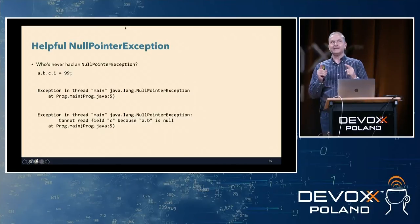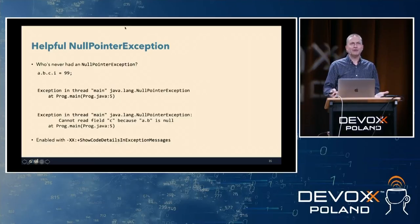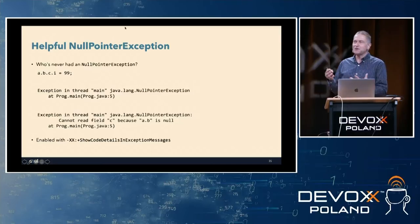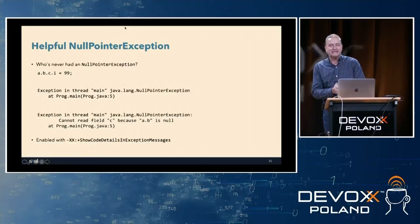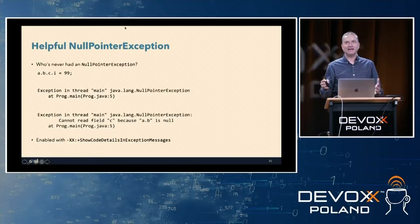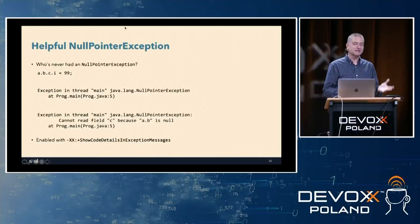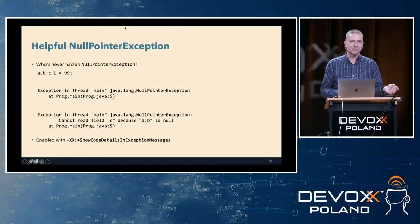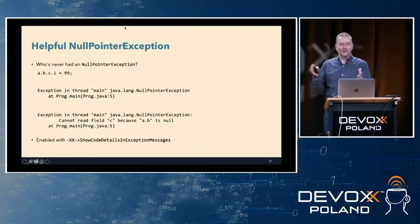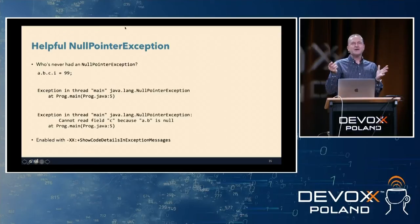There's only one downside to this: you have to enable it. There's probably some logic that says people are parsing the error messages and that might cause backward compatibility issues. But really, just turn it on by default and let people turn it off if they need to parse error messages. To turn it on, you need this command line flag: -XX:+ShowCodeDetailsInExceptionMessages. Couldn't really make that much longer, could they? It could have been shorter.